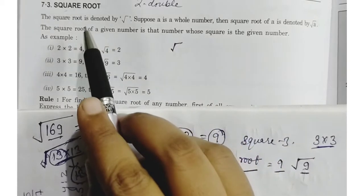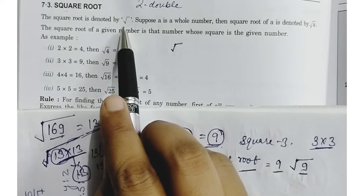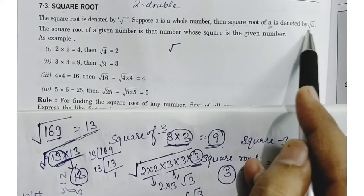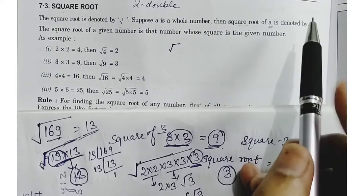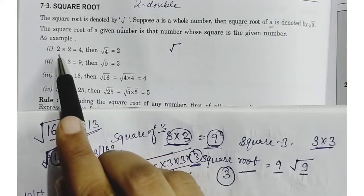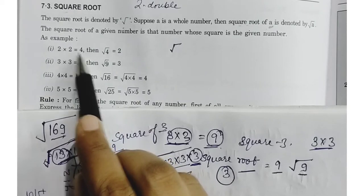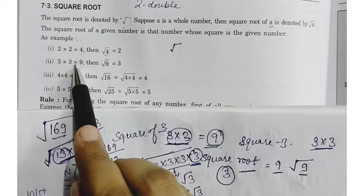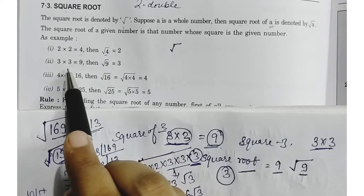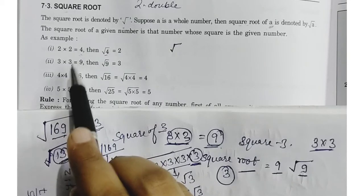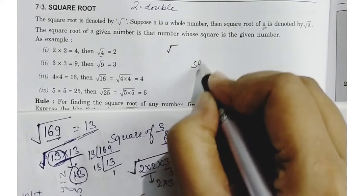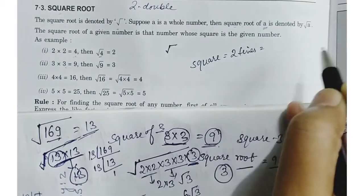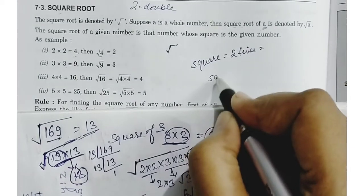So you can see here that square root is denoted by this sign — this is the sign of square root. Suppose a whole number is there اور اس کا square root کہا جا رہا ہے تو ہم اس طرح سے symbol کے نیچے اس کو لکھ دیتے ہیں. جیسے یہاں پہ example: 2×2=4 ہے، تو اگر 4 کا square root کہا جائے تو 2 ہوتا ہے. اسی طرح 3×3=9 ہے — اگر 9 کا square root بولا جائے تو 3 ہوتا ہے. مطلب square کرنے میں اس digit کو 2 times لکھ کر multiply کریں — جو answer ہوگا وہی اس کا square ہوتا ہے.